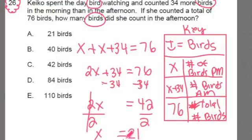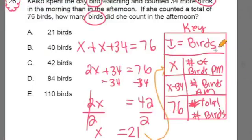I find out that x is equal to 21. Now what does that mean? Well, you go back to your key. x is equal to 21 and x is equal to the number of the birds in the afternoon. And that's the answer.